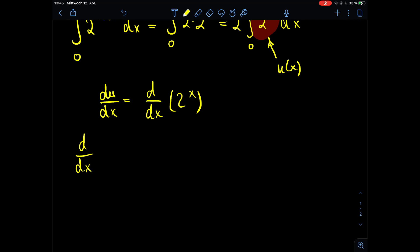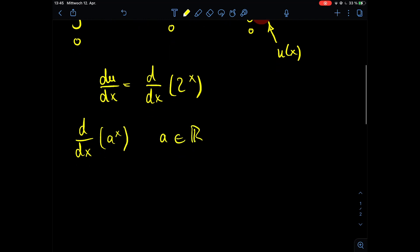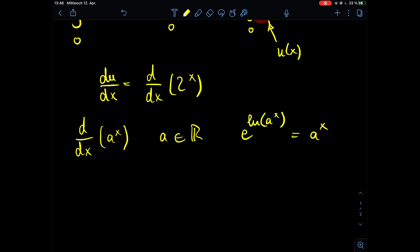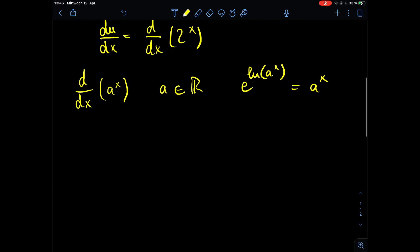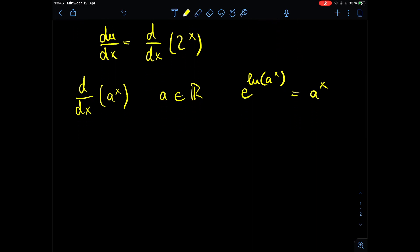Well we can take a look at how to take the derivative of any exponential function a to the power of x with a being a real number, because all we have to do is make use of the exponential function with the basis the Euler number e to the power of the natural log of a to the power of x, because this is equal to a to the power of x because the natural log and the exponential functions are inverse to each other. So we can use that together with the chain rule to find out what the actual derivative is.